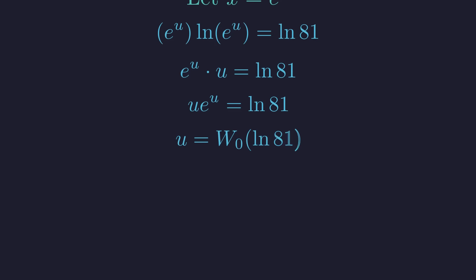By definition, the solution for u is the principal branch of the Lambert W function, evaluated at the natural log of 81. This gives us the solution for u, but our original problem asked for x. Therefore, we must now reverse our substitution.